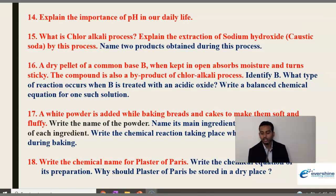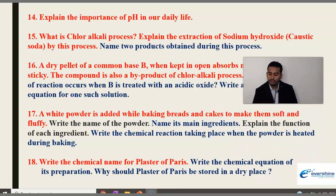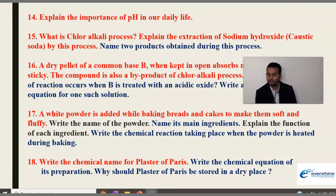Next: What is the chloralkali process? Explain the extraction of sodium hydroxide (caustic soda) by this process and name the products obtained. A dry pellet of a common base B, when kept in open, absorbs moisture and turns sticky — this compound is also a by-product of the chloralkali process. Identify B, state what type of reaction occurs when B is treated with an acidic oxide, and write a balanced chemical equation. Next: A white powder used in baking breads and cakes to make them soft and fluffy — name the powder, name its main ingredients, explain the function of each ingredient, and write the chemical reaction when the powder is heated during baking. Also: Write the chemical name of plaster of Paris, write the chemical equation of its preparation, and why should plaster of Paris be stored in a dry place?